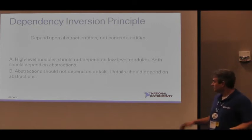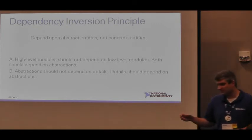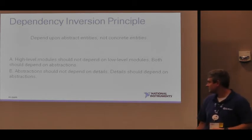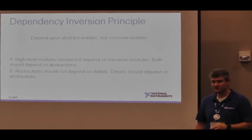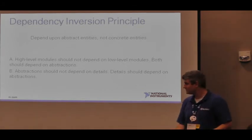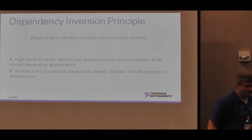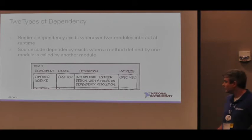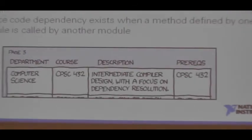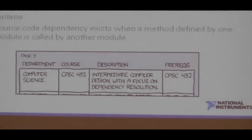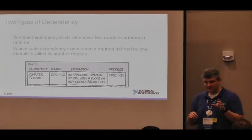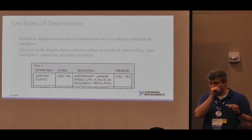The formal definition has two parts. Part A is the one that makes the most sense: high-level modules should not depend on low-level modules — both should depend on abstractions. Part B says: abstractions should not depend on details; details should depend on abstractions. Part B is what gave me the most trouble. As we go, I'm going to talk about two different kinds of dependencies. We have a runtime dependency, which exists whenever two modules interact at runtime. Think about data flow on a block diagram — when node A operates, then node B operates and takes input from A, there's a runtime dependency. That defines how our software works to solve the problem. The other type is source code dependencies, which exist when a method or VI defined by one module is called by another — that's when you see VIs in your dependencies list in your project.